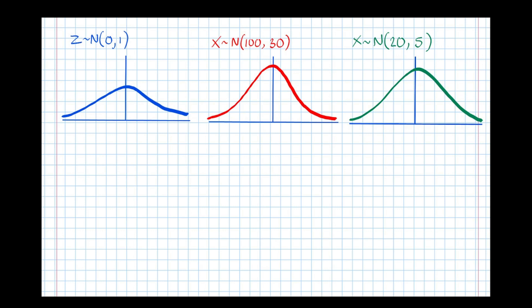In this video, we're going to have a look at the concept of a z-value in the normal distribution. A z-value is the number of standard deviations we are from the mean in a normal distribution.